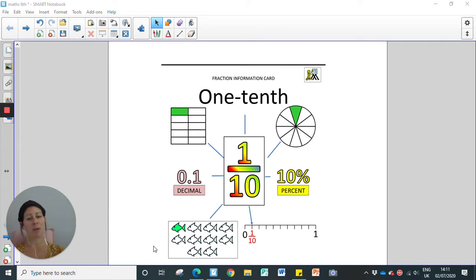We can represent one tenth as pictures as well, so here we've got ten fish and one fish has been shaded. And we can also show one tenth on a number line here. So between zero and one we have ten intervals, and each of those intervals represents one tenth. So in between whole numbers we can have intervals which show part of a whole.